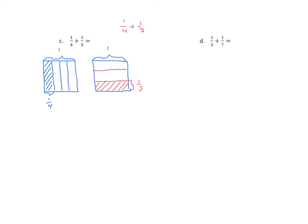I'm going to rewrite the problem: one-fourth plus one-third. Now we're going to use these lines to create equivalent fractions, just like we did in the first one. For one-fourth, I'm going to now draw two horizontal lines. Now our fraction is no longer divided into fourths, but we have the same area shaded, so we know it's equivalent.